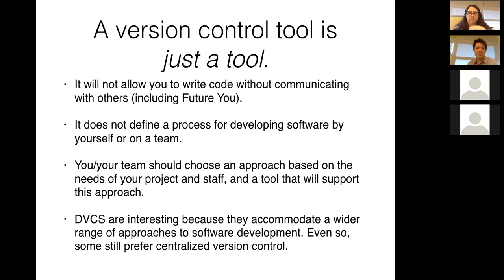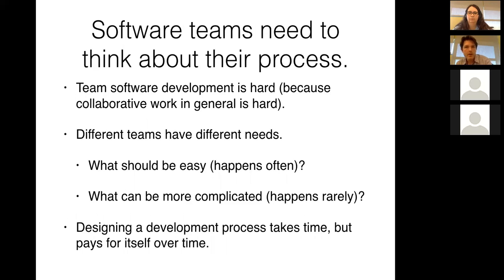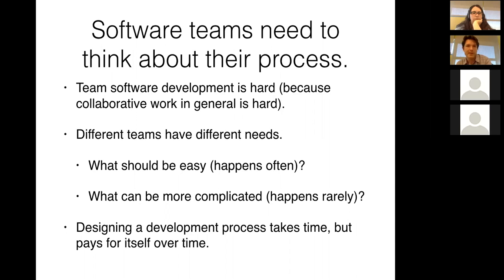One reason distributed version control systems are interesting is that they can accommodate a very wide range of approaches to software development, but for some teams, centralized version control is still more attractive. You need to think about your process on a software team, because different teams have different needs. Things that happen often should be easy; things that happen rarely can be more complicated. How often you release software, how often you interact with customers — all of these determine what should be easy and what should be hard in your process.